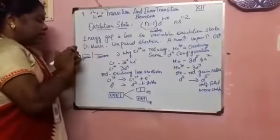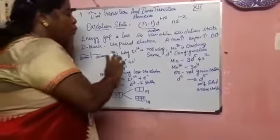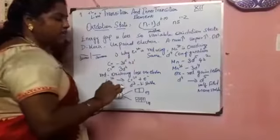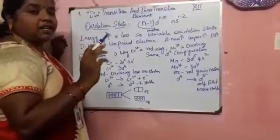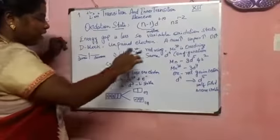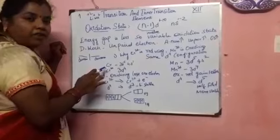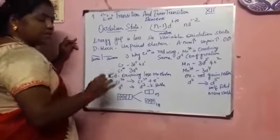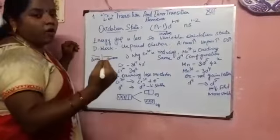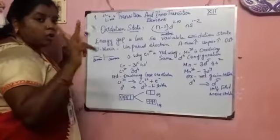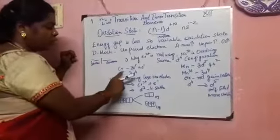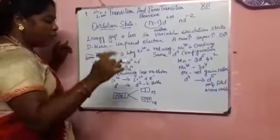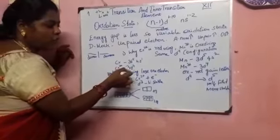A very important question in this lesson: why is Cr²⁺ a reducing agent and Mn³⁺ an oxidizing agent, when both have the same d⁴ configuration? For chromium, the configuration is 3d⁵4s¹. For Cr²⁺, we remove 2 electrons: 5 plus 1 equals 6, minus 2 gives 4. So Cr²⁺ shows a d⁴ configuration. For manganese, the configuration is 3d⁵4s². For Mn³⁺, we remove 3 electrons: 5 plus 2 equals 7, minus 3 gives 4. So Mn³⁺ also shows d⁴ configuration.